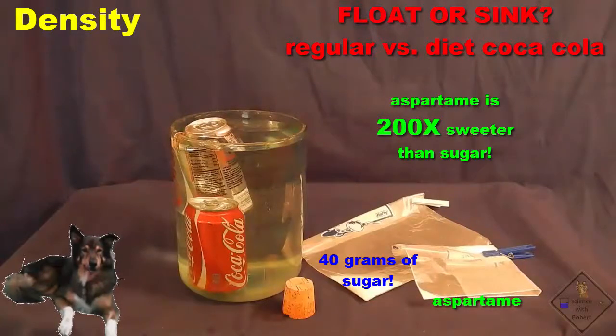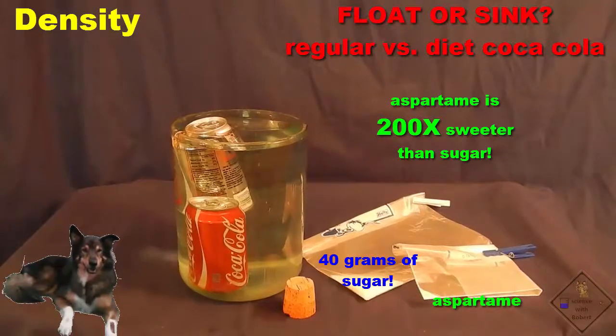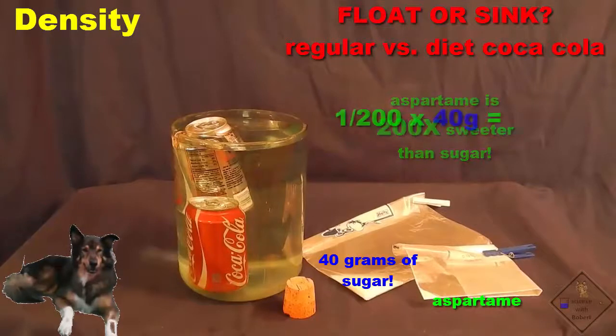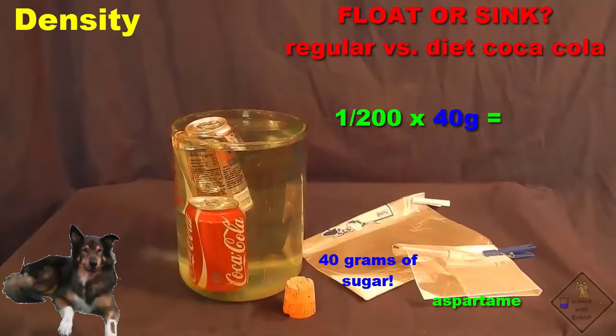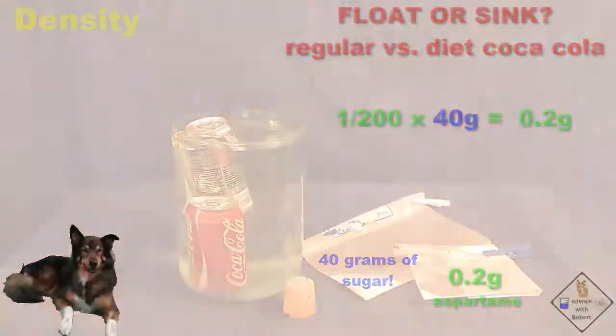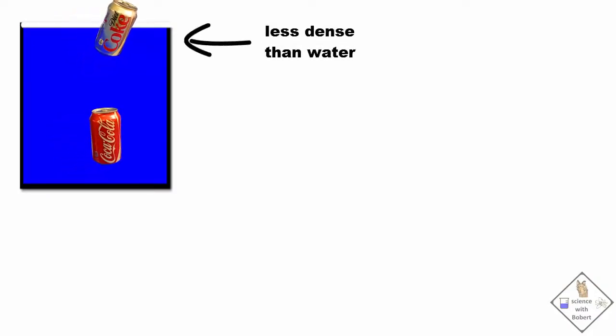That means the manufacturer wants to put in only a small amount of aspartame. In fact, since aspartame is 200 times sweeter than sugar, they only want one two hundredth of the 40 grams or 0.2 grams of aspartame in each can of Diet Coke. The reason why cans of Diet Coke and corks float is because they are less dense than what they are floating in.